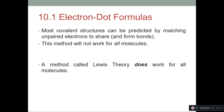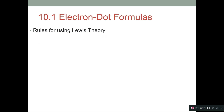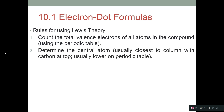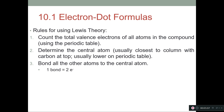Most covalent structures can be predicted by matching unpaired electrons, but this method doesn't work for all molecules. A method called Lewis theory does work for all molecules. The rules: number one, count the total number of valence electrons for all the atoms in the compound using the periodic table. Number two, determine the central atom — usually the one closest to the column that has carbon at the top. If atoms are in the same column, look at what's lower on the periodic table. Number three, put bonds between all the atoms and the central atom, where each bond counts as two electrons.